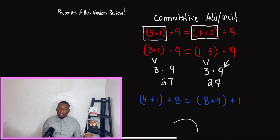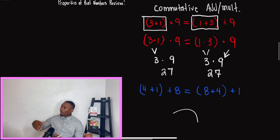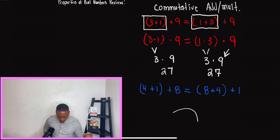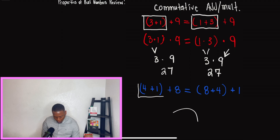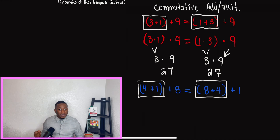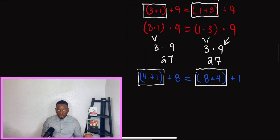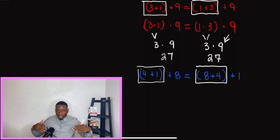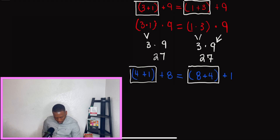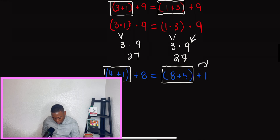Now we're going to go on to our next problem and figure out what property this is. I notice that it has parentheses, so let's put a box around these parentheses. The first thing I notice is that what is inside the parentheses is not the same — that should be an indicator. When the groupings change, or what's inside parentheses, brackets, or braces changes, nine times out of ten we are going to be talking about the associative property of addition or multiplication.